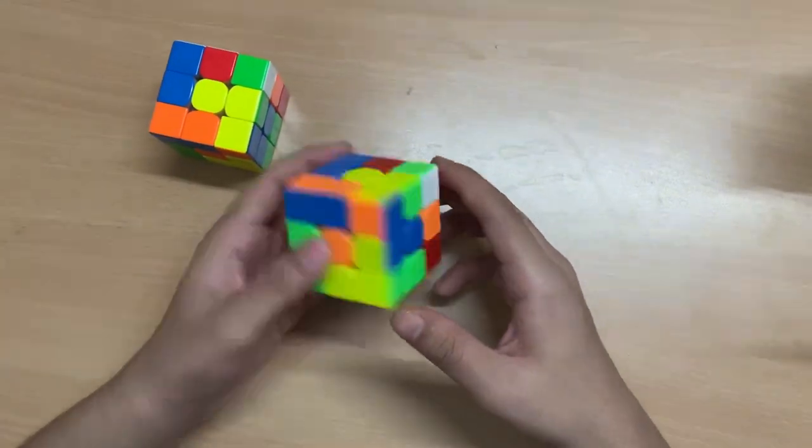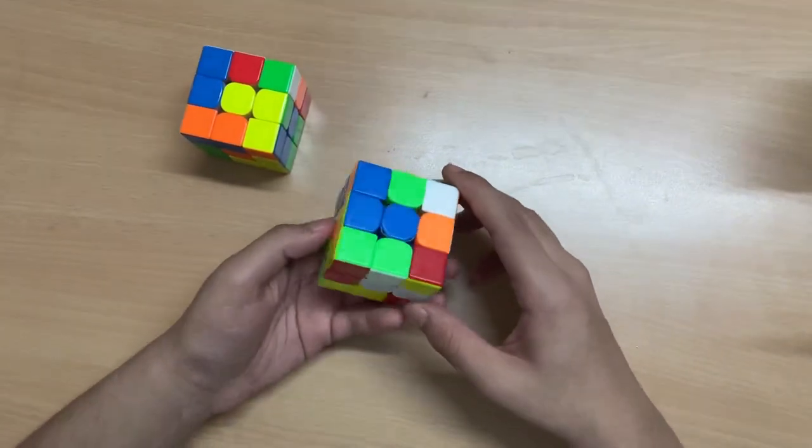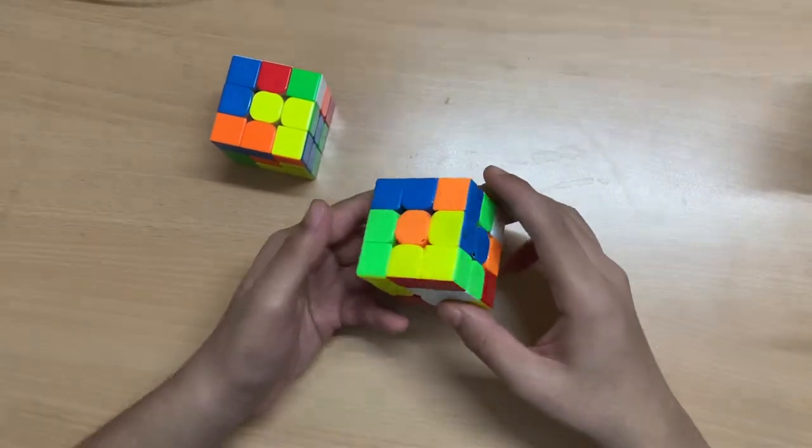So this is the scramble I got in which I got the 4.91 solve, 4.81 solve, not used as a new number.